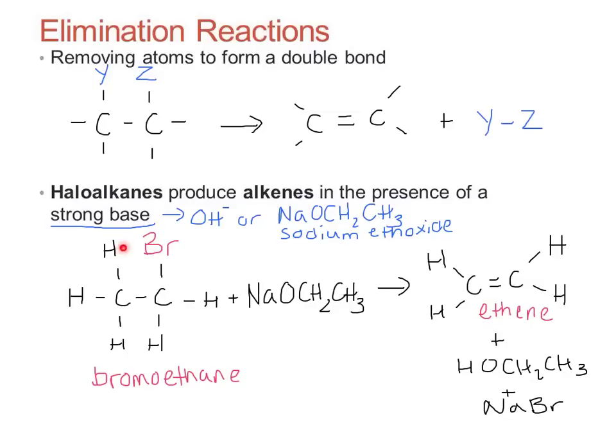First, this hydrogen atom is taken by the sodium ethoxide, by the strong base. A base is a proton acceptor. And the electrons from this bond are what become part of the double bond in our product. The bromine takes the electrons from this bond with it to make a bromide ion, and then later becomes part of this sodium bromide ionic compound.